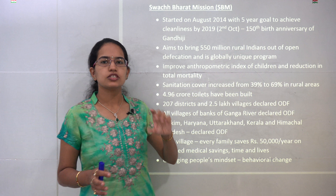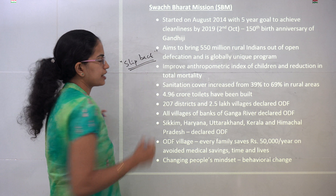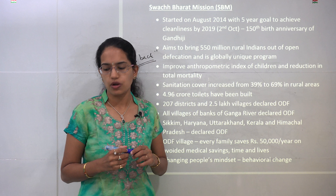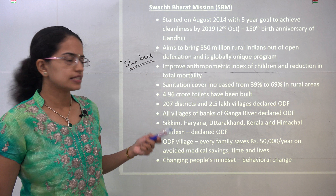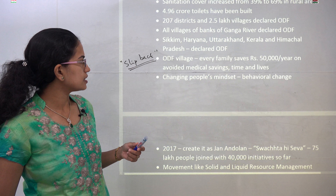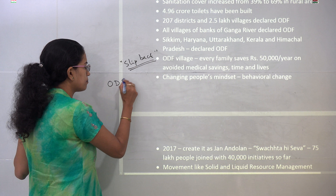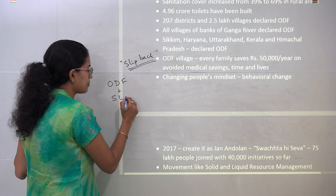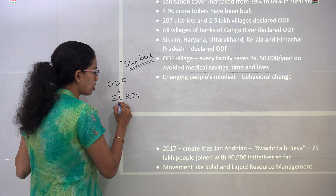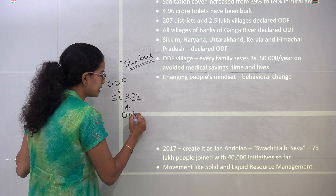The idea was to bring 550 rural households out of open defecation. Till now, 5 states have been declared open defecation free: Sikkim, Haryana, Uttarakhand, Kerala, and Himachal Pradesh. Nearly all of the villages along the Ganga river have been declared ODF. 5 crore toilets have been built and sanitation cover has increased from nearly 39% to 69%, which is really remarkable.